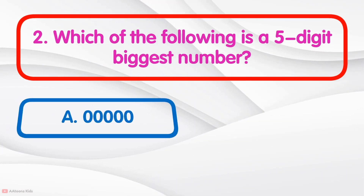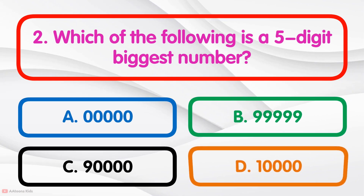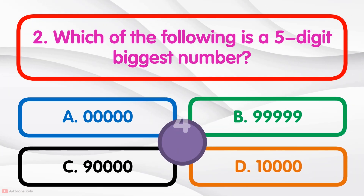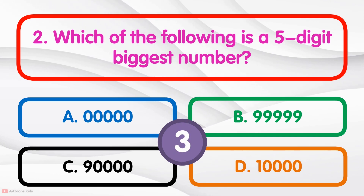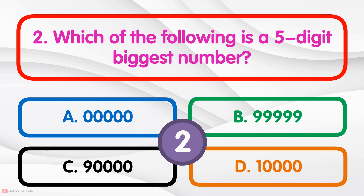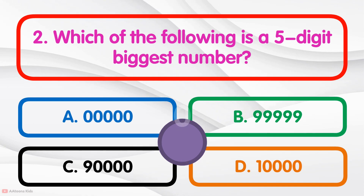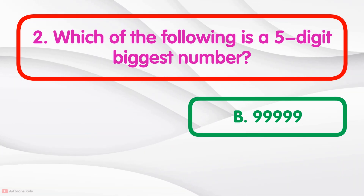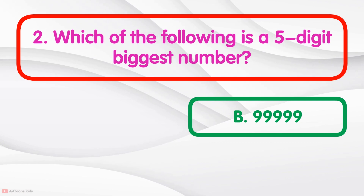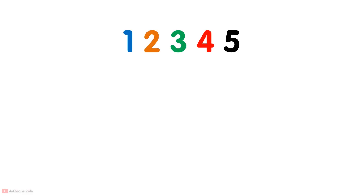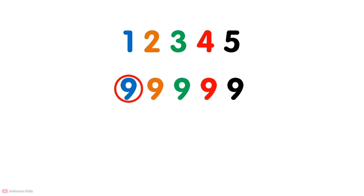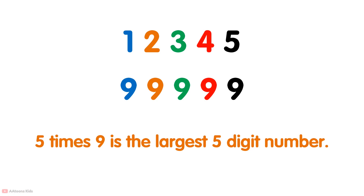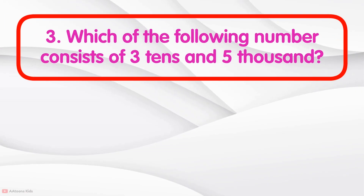Which of the following is the five-digit biggest number? 99999 is the biggest five-digit number. To get the five-digit biggest number, simply write five nines: one, two, three, four, five. Five times nine is the biggest five-digit number.